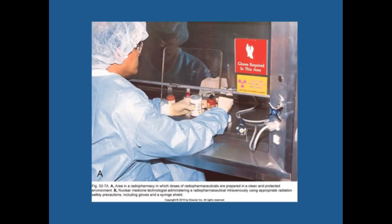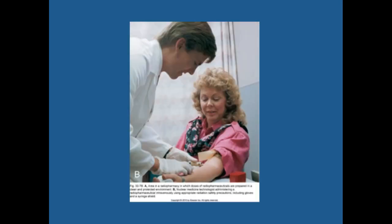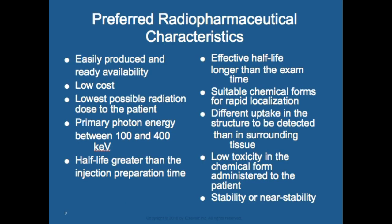Technologists handle isotopes wearing gloves behind a lead shield with a dosimeter on their hand. They typically use lead syringes when injecting. Preferred radiopharmaceutical characteristics include being easily produced and readily available, low cost, and delivering the lowest permissible radiation dose to the patient.